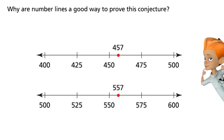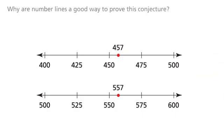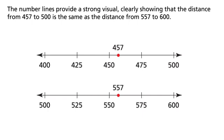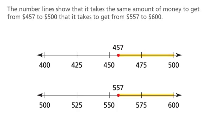Why are number lines a good way to prove this conjecture? The number lines provide a strong visual, clearly showing that the distance from 457 to 500 is the same as the distance from 557 to 600. The number lines show that it takes the same amount of money to get from $457 to $500 that it takes to get from $557 to $600.